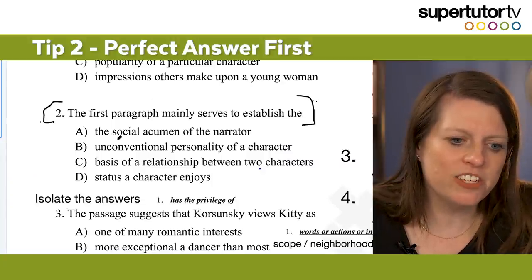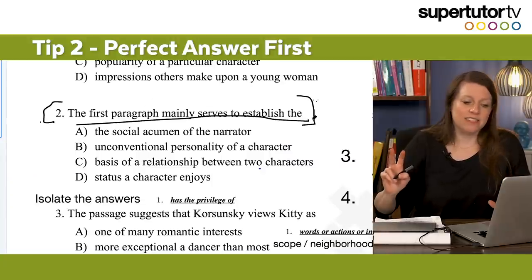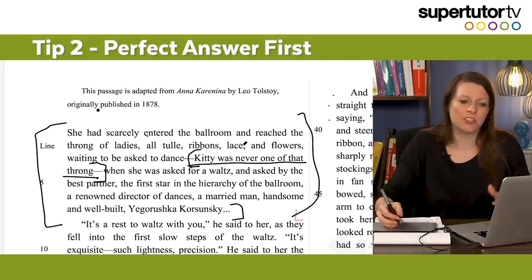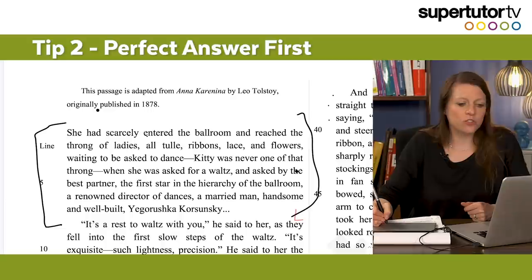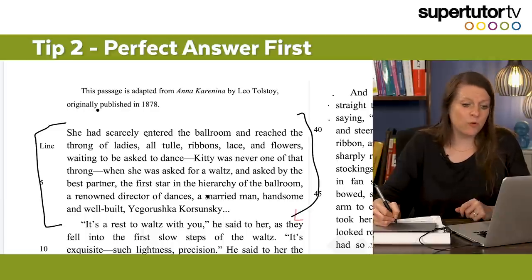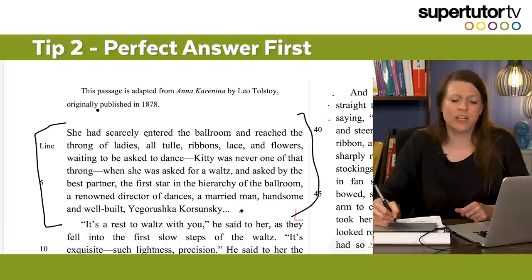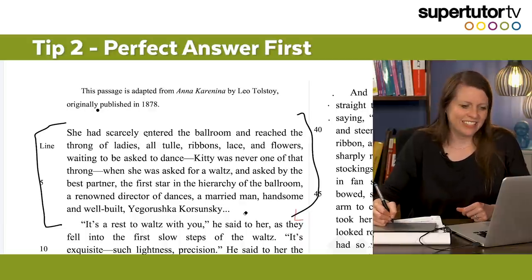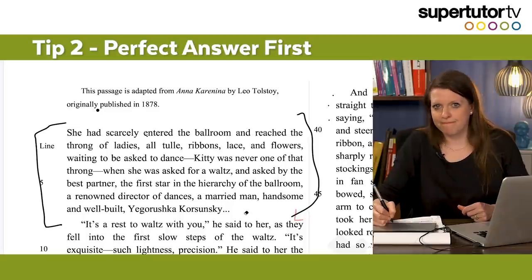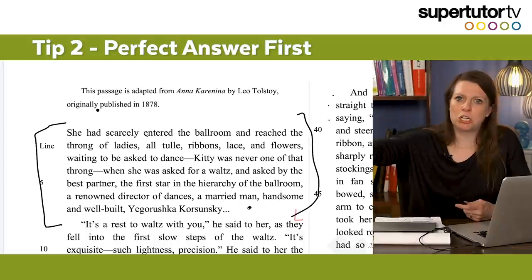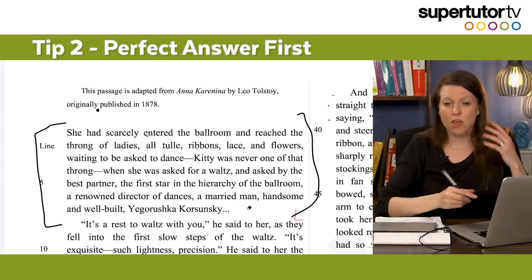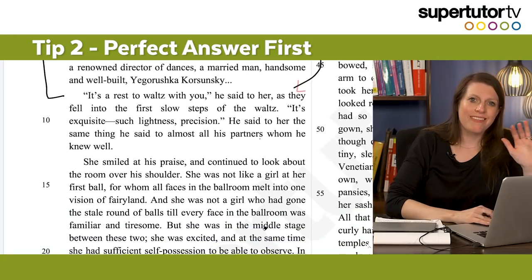I'm going to look at this question. It says: the first paragraph mainly serves to establish the... I do not look down at the answer choices, guys. My tip is go back up and read, and come up with your perfect answer first. What does this establish? Why do we even have this paragraph? What's its function? She had scarcely entered the ballroom and reached the throng of ladies — all tulle, ribbons, lace, and flowers waiting to be asked to dance. Kitty was never one of that throng. When she was asked for a waltz and asked by the best partner — the first star in the hierarchy of the ballroom, a renowned director of dances, a married man, handsome and well-built — Yegorushka Korsinsky. So my perfect answer is: Kitty is part of the cool crew. That is what this establishes.